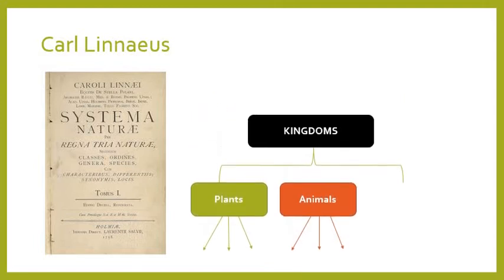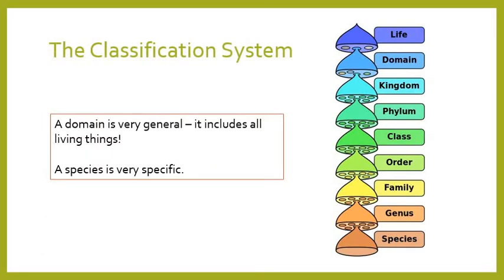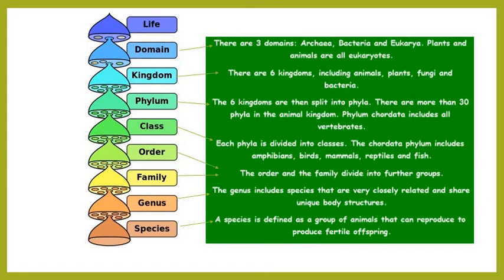Scientists also added something above a kingdom: a domain. If we look at the current system, based on the Linnaean system, at the top we have all living things — the domain. Under that is the kingdom, divided into plants, animals, bacteria, and other things. Underneath that we have phylum, then class, order, family, genus, and finally species. A domain is very general, but as you move down to species it becomes very specific — each step narrows down the classification further.